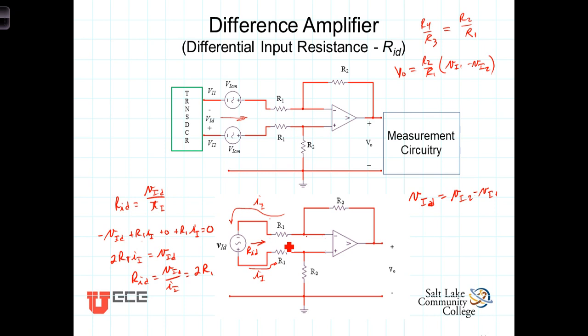Now this introduces a conflict in design criteria. On the one hand we're wanting to get some gain out of this amplifier which we know is equal to R2 over R1. So to get more gain, ideally we'd have R1 be relatively small.